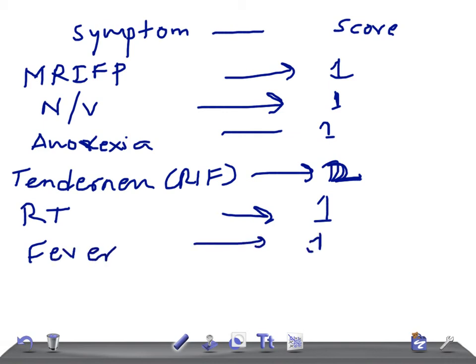Then we have the lab findings, like more WBC, leucocytosis, what we call, the score is 2. And if there is a shift to the left of neutrophils, then we have score 1.